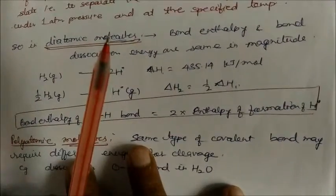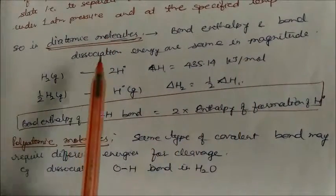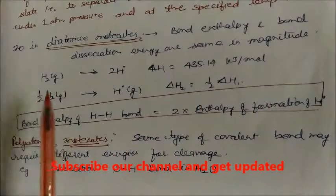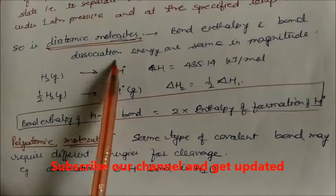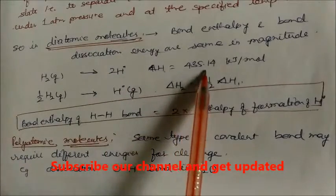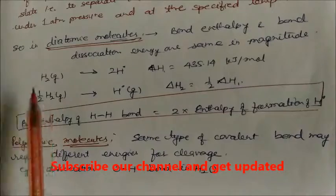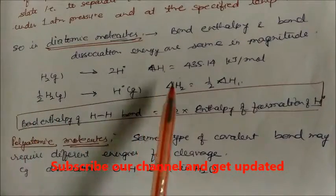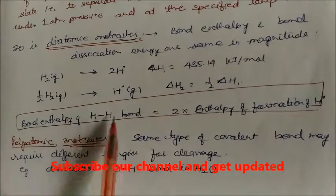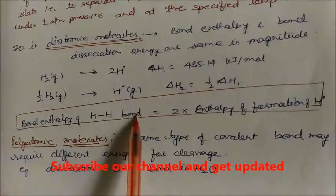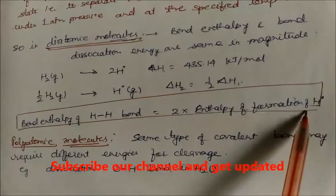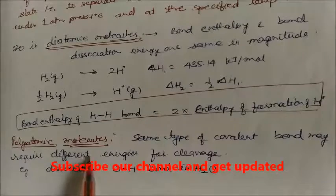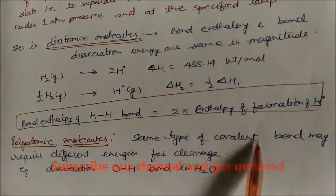In diatomic molecules, bond enthalpy and bond dissociation energy are the same in magnitude. For example, for H₂ the energy is 435.14 kJ/mol. For half a mole (single molecule), the energy is half of ΔH. The bond enthalpy of the H–H bond equals two times the enthalpy of formation of neutral hydrogen atoms.